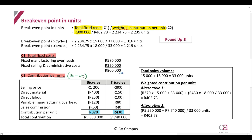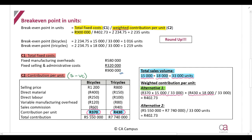First, calculate the total sales volume by adding the expected sales volume for bicycles and tricycles together. For alternative one: take the contribution per unit for bicycles, multiply by 15,000 expected units, and divide by the total expected sales. Do the same for tricycles — take the contribution per unit, multiply by the expected units, and divide by the total expected sales in units. Add those together to get the weighted contribution per unit.